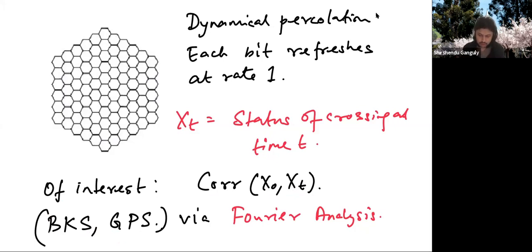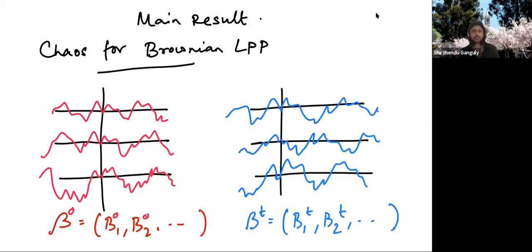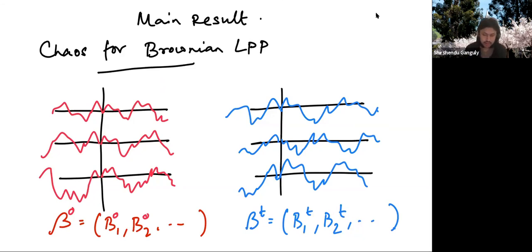These are some of the examples I wanted to highlight — eigenvectors, spin glasses, and critical percolation. The recent work with Alan Hammond is about understanding what exactly the analogous theory is in this KPZ world. The goal is to understand chaos for Brownian last passage percolation.